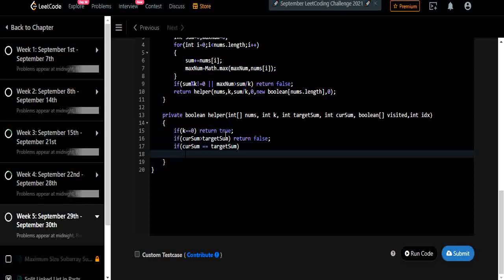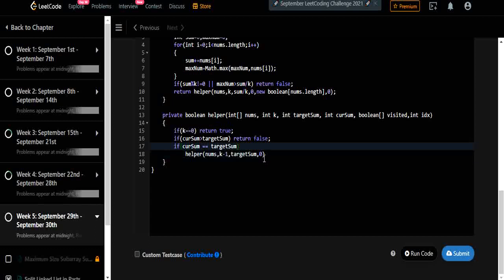If we reached current sum as the target sum that means we have found our new subset. So we are going to call recursively the same function to find the rest of the subsets. We found one subset then our k is going to decrement one. Target sum is going to be same and current sum is reset to zero because we found one and we are going to initialize it back to zero to find the next one.